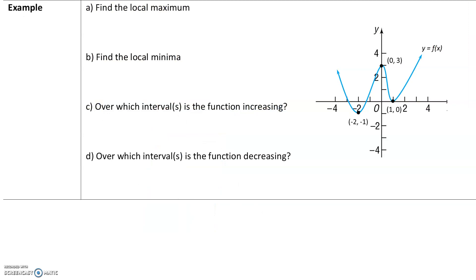Here's an example. First, let's find the local maximum. The local maximum is a turning point where the graph goes from increasing to decreasing. That turning point is right there. So the local maximum equals 3 — the actual maximum is the y value — and it occurs at x equals 0. The local maximum is 3 and it occurs at x equals 0.